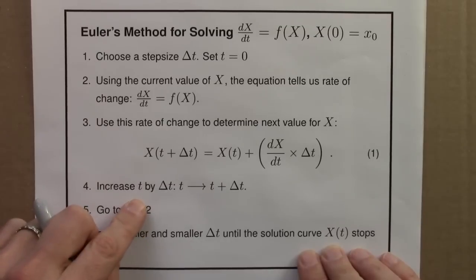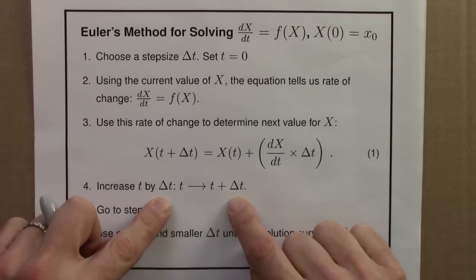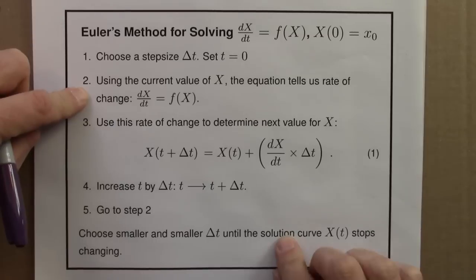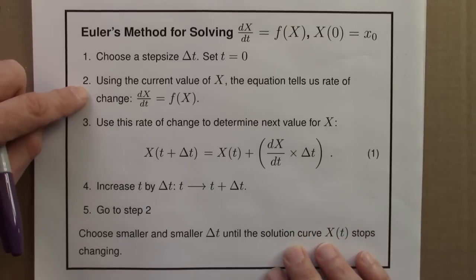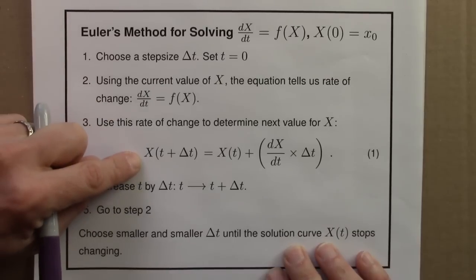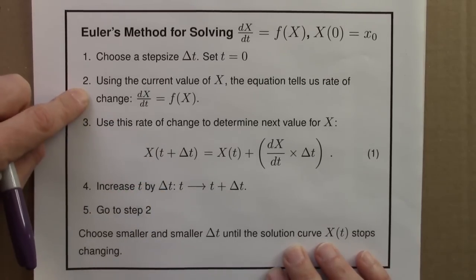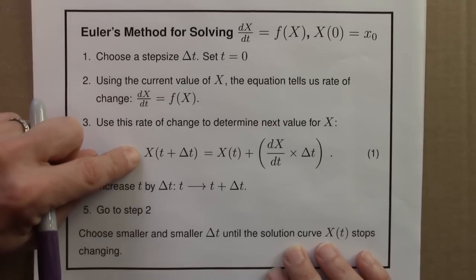Then, we increase t by delta t, and we go back to this step, and we figure out the derivative again. The derivative tells us how to go forward a little bit in time to figure out the next x. Then we update time, figure out the derivative again, move forward to figure out x.